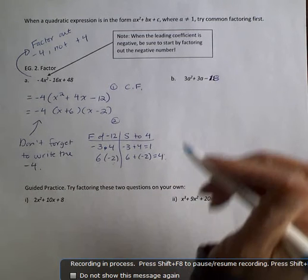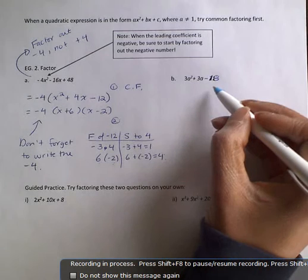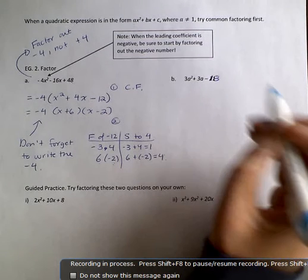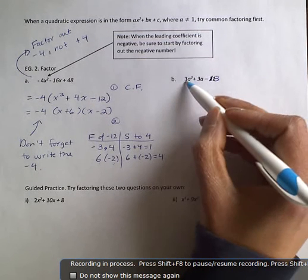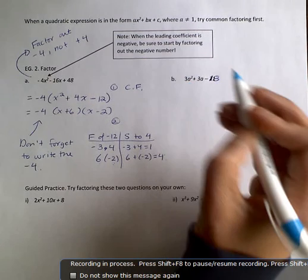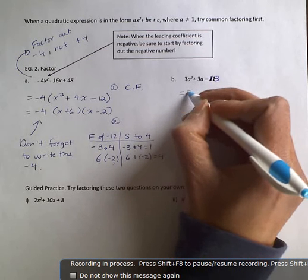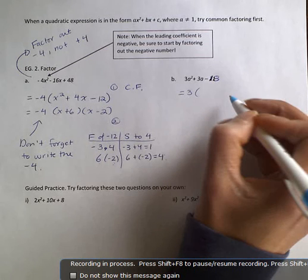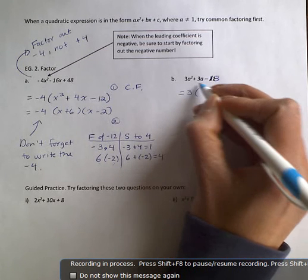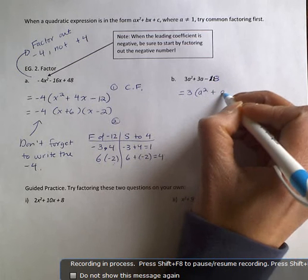So now we're going to factor 3a squared plus 3a minus 18. Again, a is not 1. This is factorable. So I'm going to factor out the 3. That's the greatest common factor. So when I factor out the 3 for my terms, I have a squared plus a minus 6.